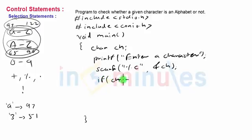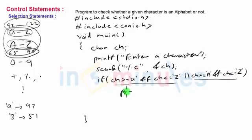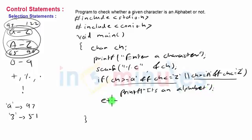We put a check: if ch is greater than or equal to 'a' and less than or equal to 'z' (lowercase), or ch is greater than or equal to 'A' and less than or equal to 'Z' (uppercase), then we print 'it's an alphabet'. Otherwise, in the else block, we print 'not an alphabet'.